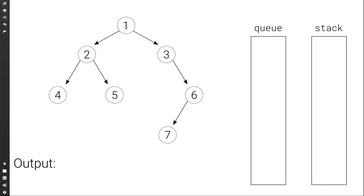So how do we actually do this? If you remember, if we do a level order traversal starting from the first level going left to right — 1, 2, 3, 4, 5, 6, 7 — we use a queue. We initially push the root node to the queue, set the current node to the front of the queue, visit that node, and add the left child then the right child to the queue. If instead we first add the right child to the queue and then the left child, we get a level order traversal where we visit every level starting from the first but going right to left.